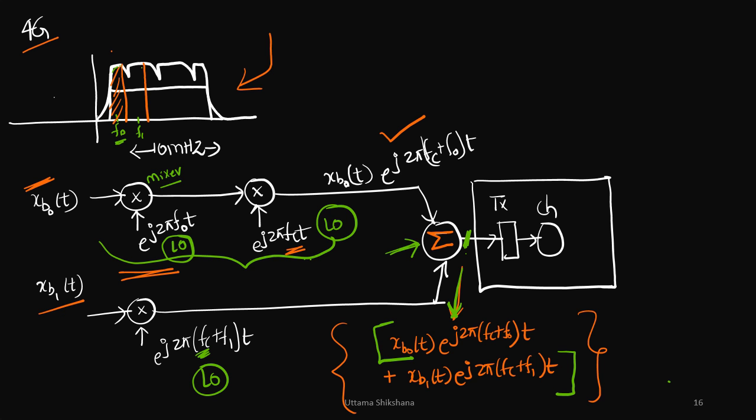Finally all these things will be multiplexed and the multiplexed signal is shown over here. That would be transmitted over the air. Now if you see, the number of local oscillators required here was equivalent to the number of subbands chosen.